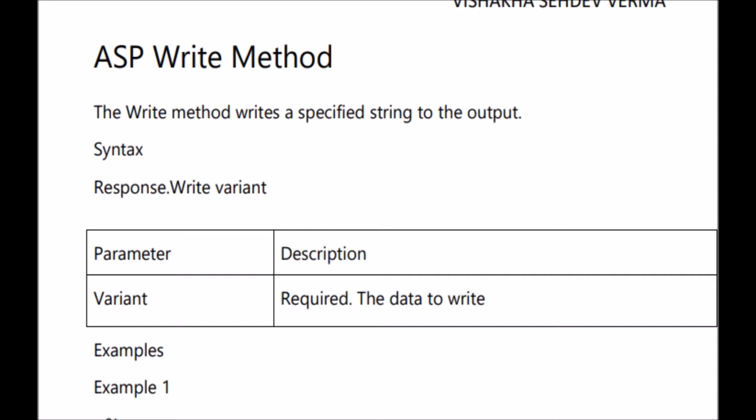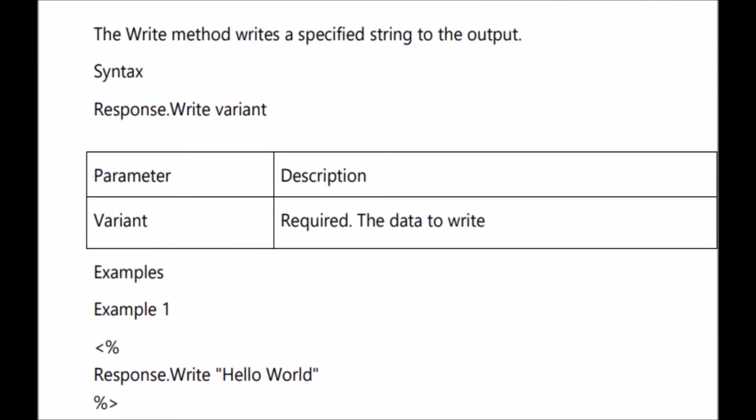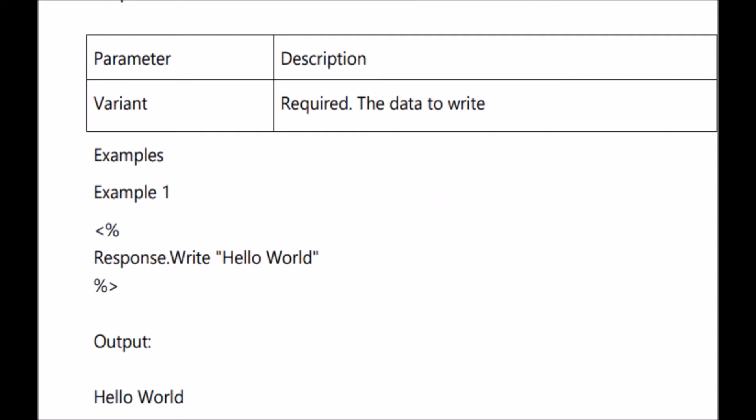The first method we will discuss is the ASP write method. The write method is used to write a specified string to the output. The syntax is response.write followed by a variant — 'variant' means the string which you want to pass. In this example, the string being passed is 'Hello World', so 'Hello World' is the variant. The output will be 'Hello World'.